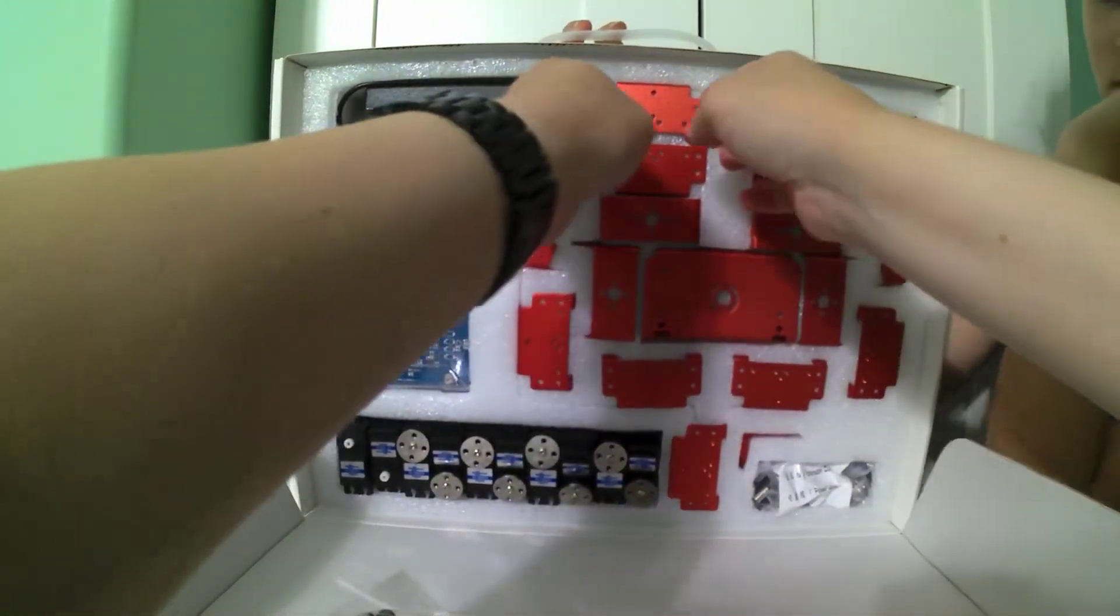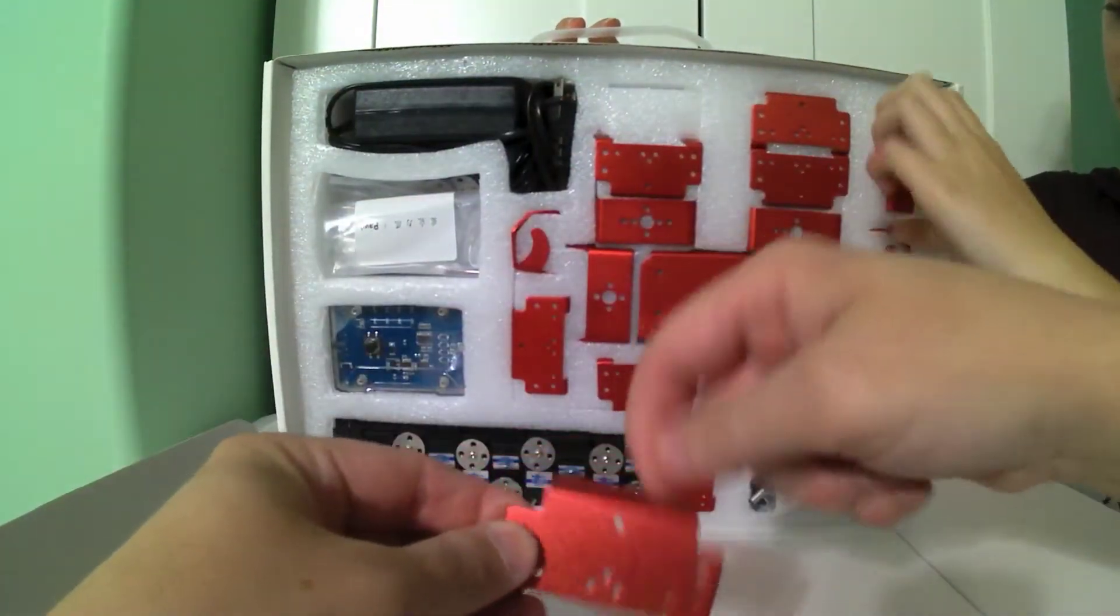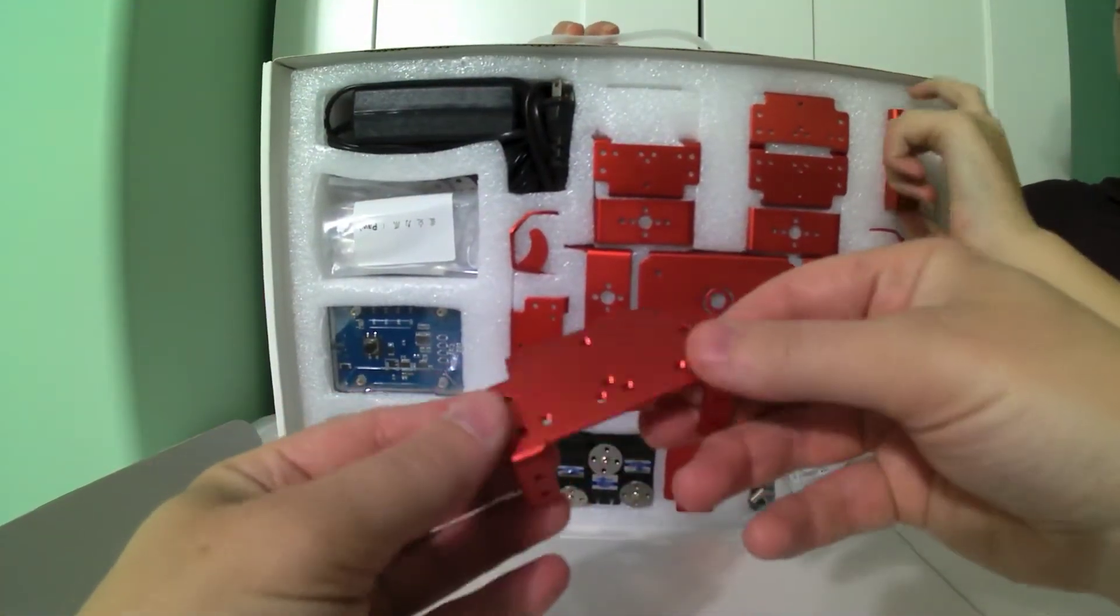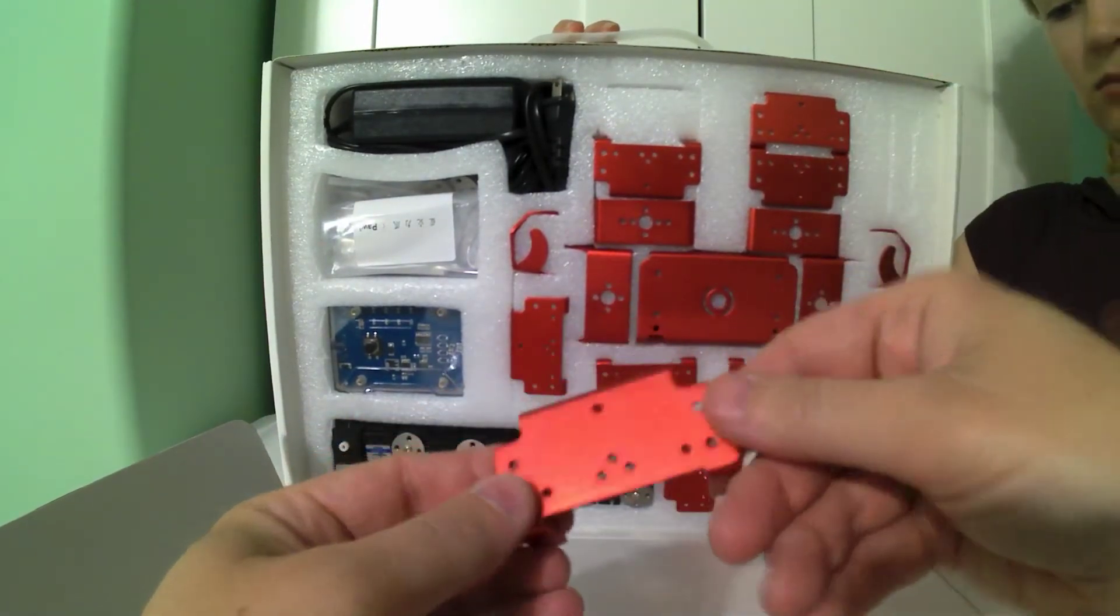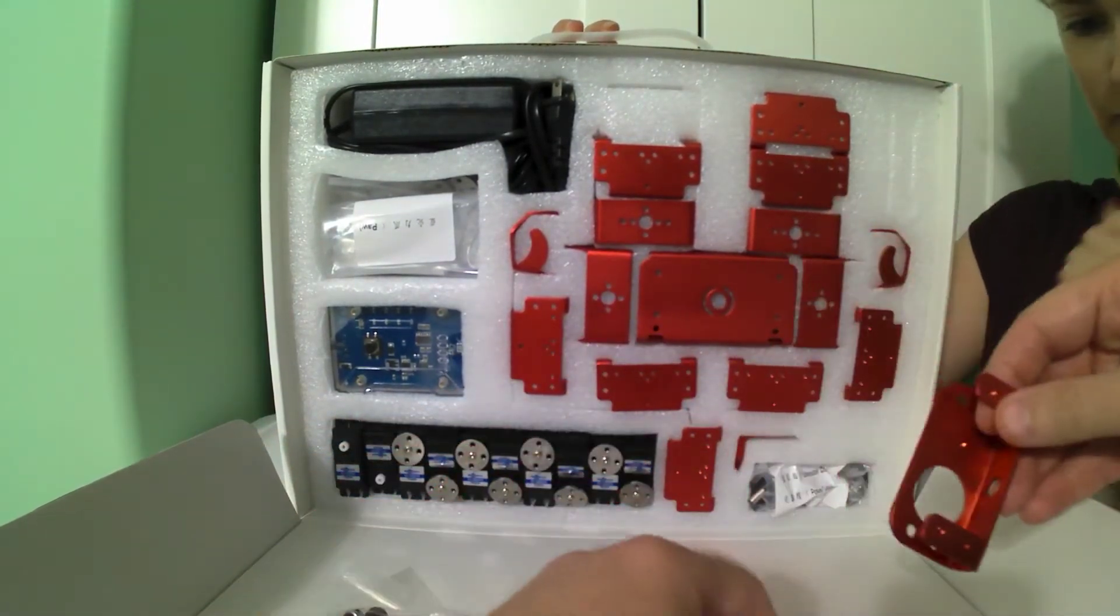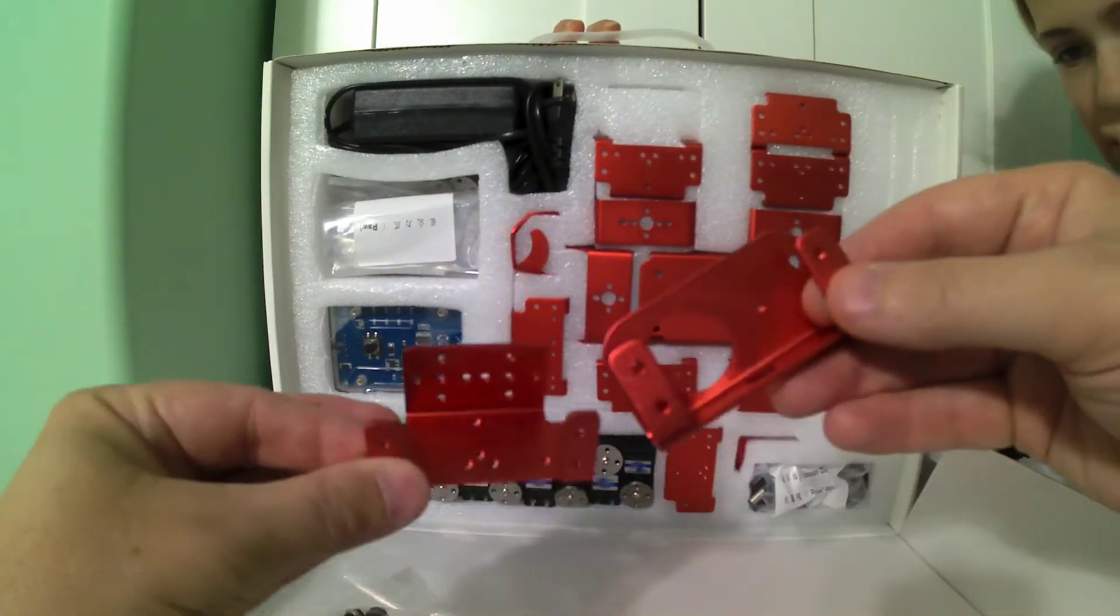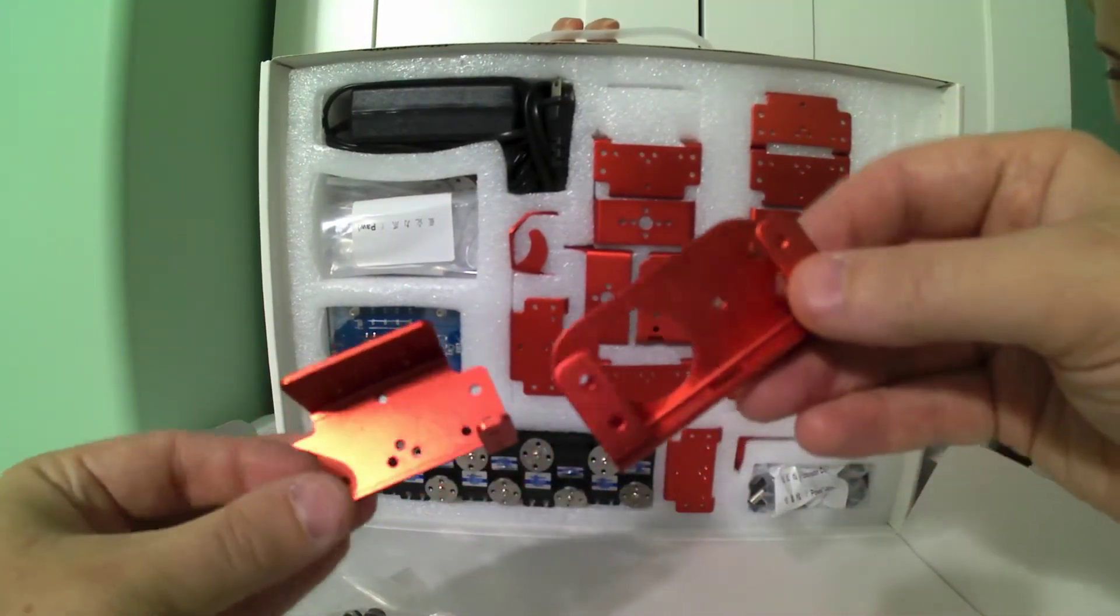If we look at some of the pieces, you can actually see that they are metal. So this is going to be a nice durable kit. It has a lot of different attachment points, and all the pieces are different, so they have different functions and do different things.